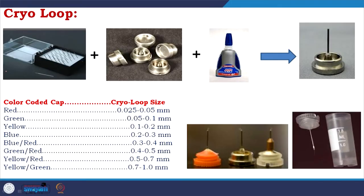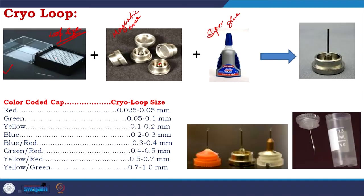There are boxes with different loop sizes. You get different boxes for different loop sizes. Then there is the magnetic base. What we do: we pick out the loop and put it in the magnetic base. You see there is a hole, then we put super glue — a glue which helps metal to stick. You pick up the loop, put it under the hole, apply super glue, and what you get is a complete loop.